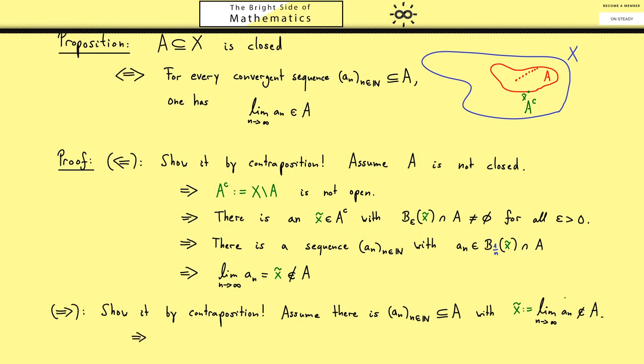Now you know by the definition of the limit you can use any epsilon ball around x tilde. You will always hit points of the sequence so inside A. And this then means that A^c, the complement of A, is not an open set.